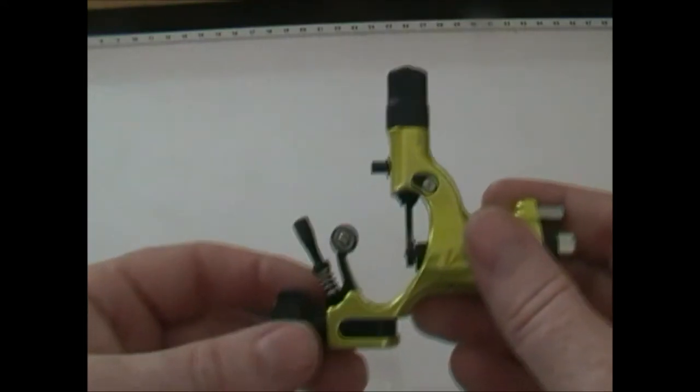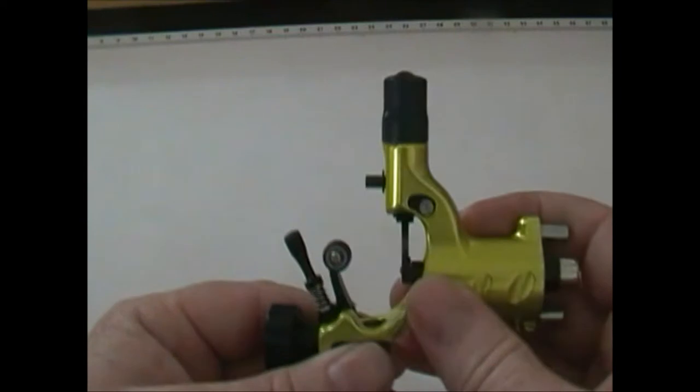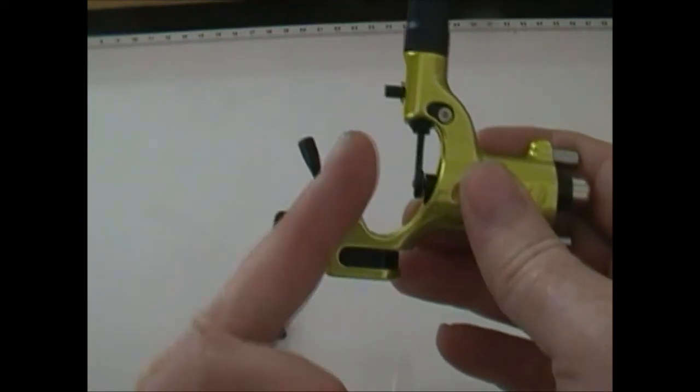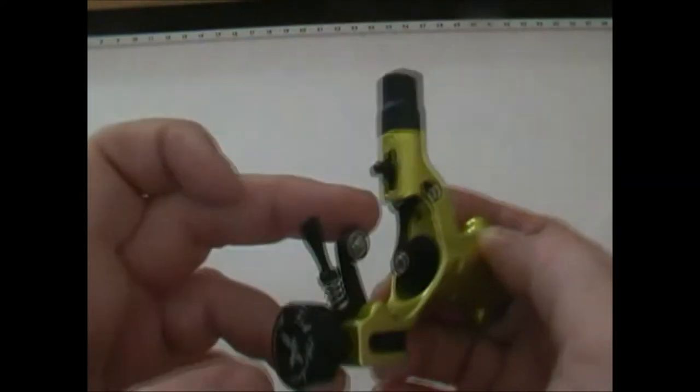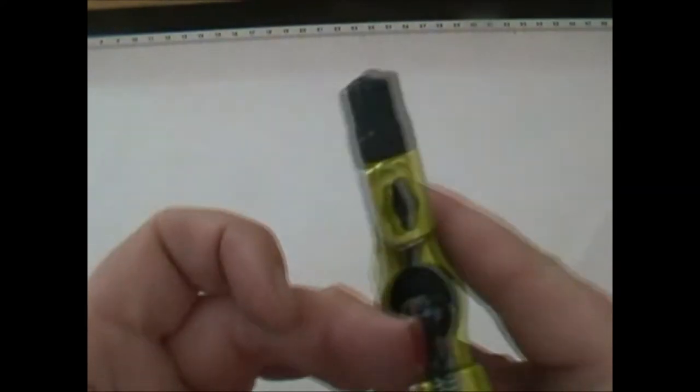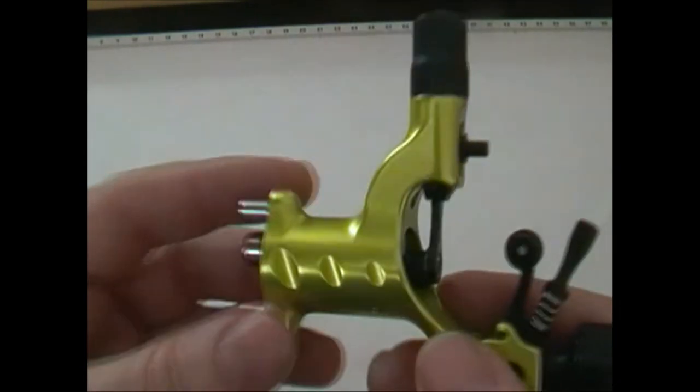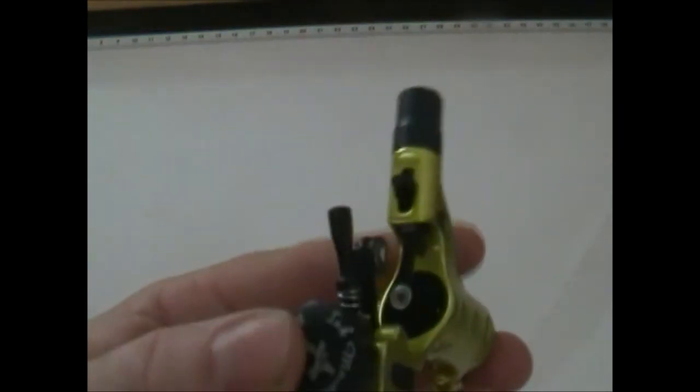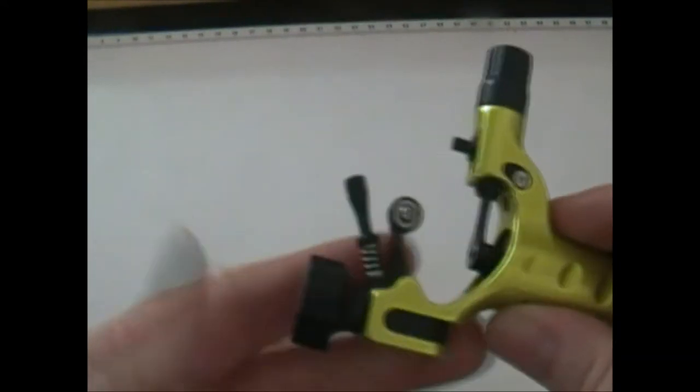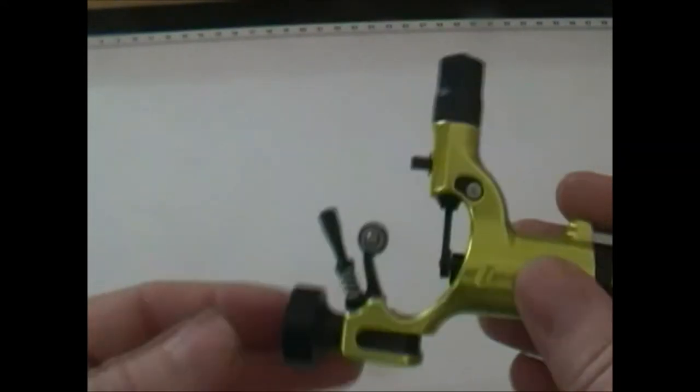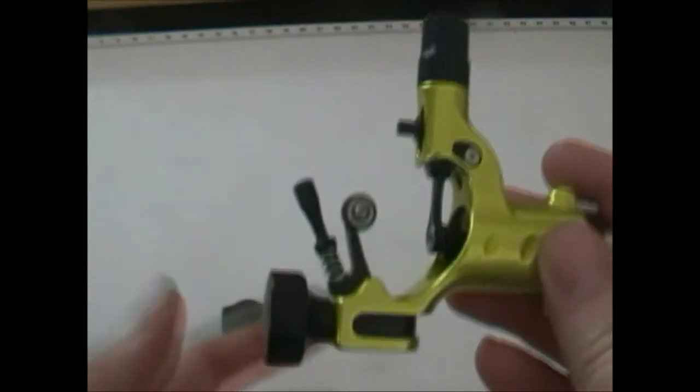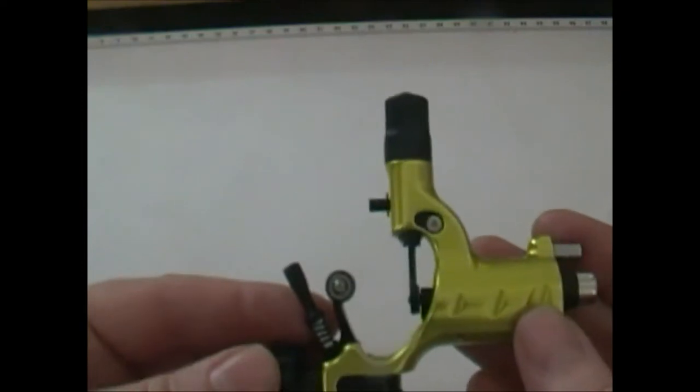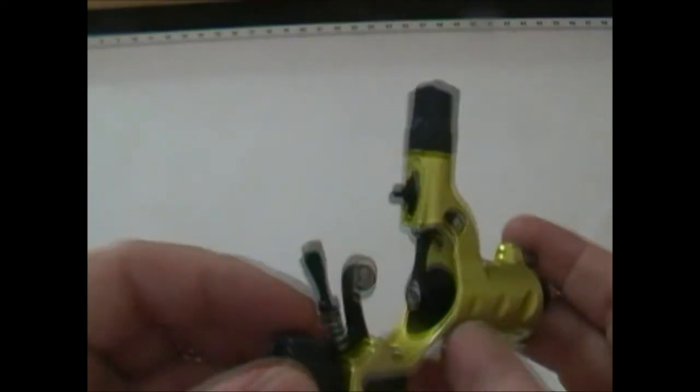When people have used cartridges in the past, it's been known for the ink to travel up the tube and actually get into the motor. Now I'd be really, I'd be pretty pissed off if I got ink in this motor, especially contaminated ink. By that I mean ink that you're using to tattoo someone, it's got blood in it, it's got plasma in it, and then that comes up the tube and it goes into your motor. You can't autoclave these machines.